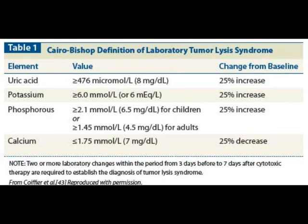The Cairo-Bishop grading system is used to define tumor lysis syndrome. The laboratory criteria include: potassium levels of more than 6 mEq/L or more than a 25% increase; uric acid of more than 8 mg/dL or more than a 25% increase; and phosphate levels of more than 4.5 mg/dL or more than a 25% increase. Two or more of these criteria must be present.